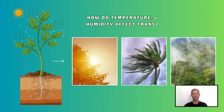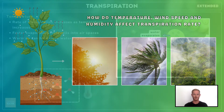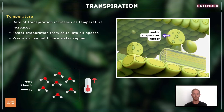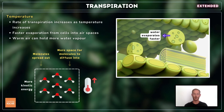Next, you need to explain how variations in temperature, wind speed and humidity affect transpiration rate in plants. As temperature increases, water molecules gain more kinetic energy, which speeds up the rate of evaporation from the surfaces of the mesophyll cells. In addition, warm air can hold more water vapour than cold air, as the molecules move more, creating additional space for others to move into.